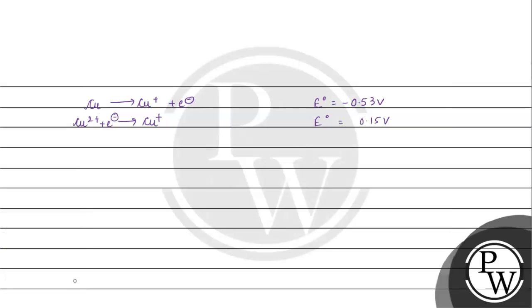If we reverse both reactions: Cu⁺ to Cu²⁺ plus electron gives E° of -0.15V, and Cu⁺ plus electron to Cu gives E° of 0.53V.